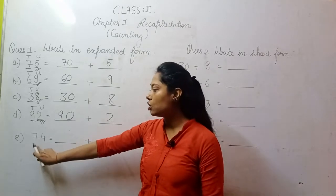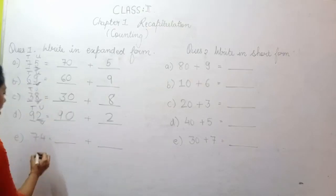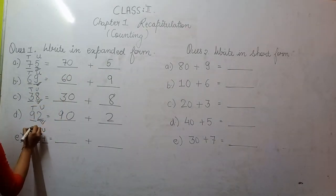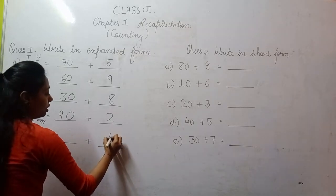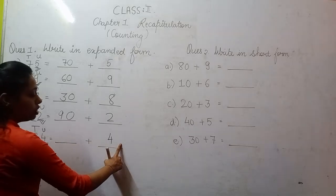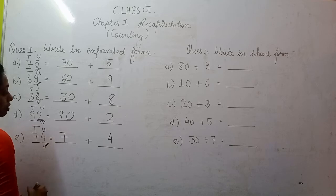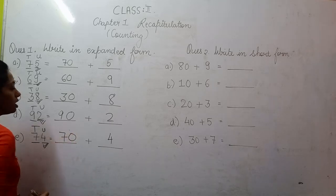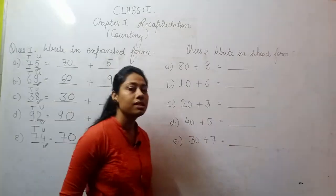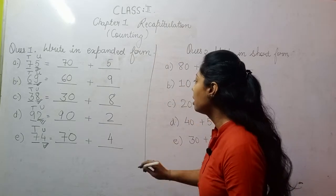Similarly, we solve 74. In 74, the units place digit is 4 — you write it first, and since there is no digit after it, no 0 is added. The 10th place digit is 7, and after counting the digits following it, there is 1 digit, so a 0 is added, making it 70. So the answer for this part is 70 plus 4. This was your first question complete.